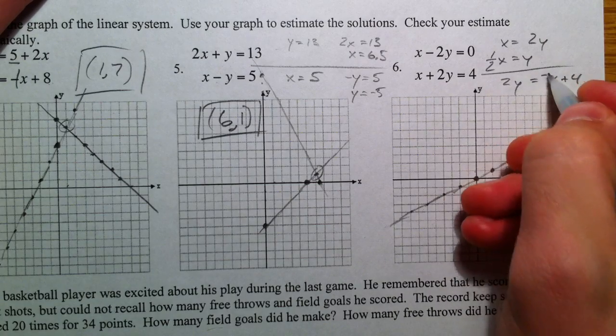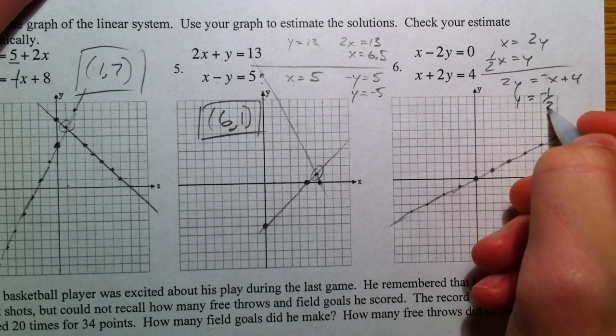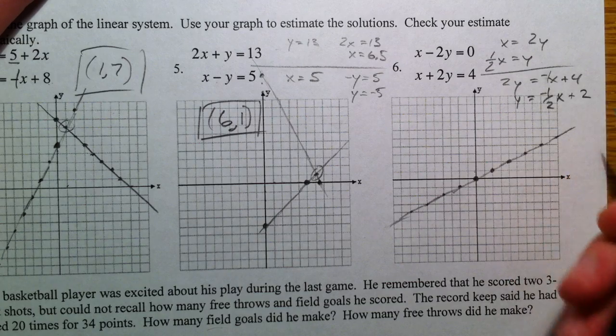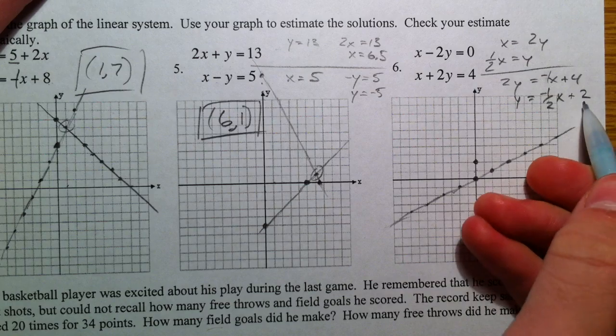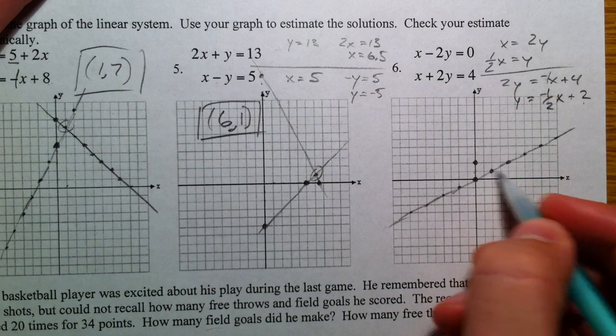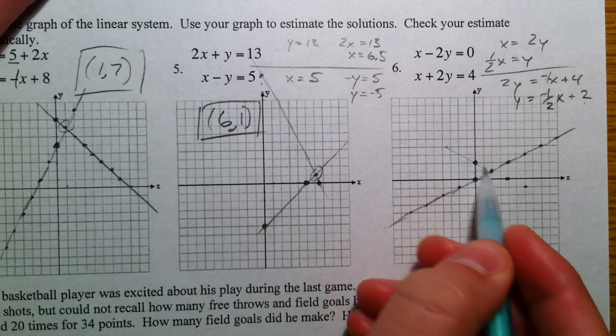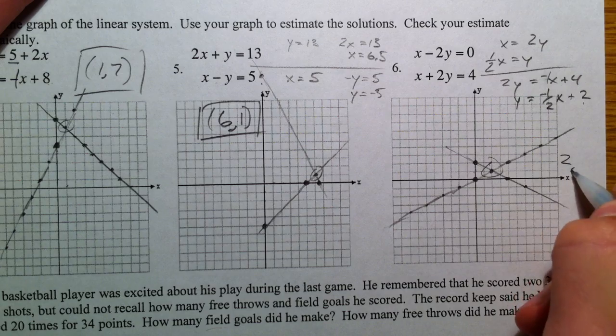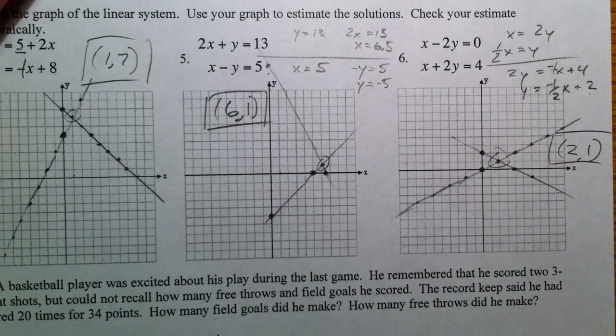For the other equation x plus 2y equals 4, subtract x to get 2y equals negative x plus 4. Then divide both by 2: y equals negative one-half x plus 2. So up 2 for the y-intercept, down 1 over 2. And so you have that line. 2, 1 is the point of intersection.